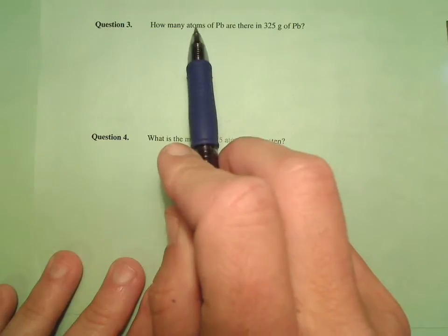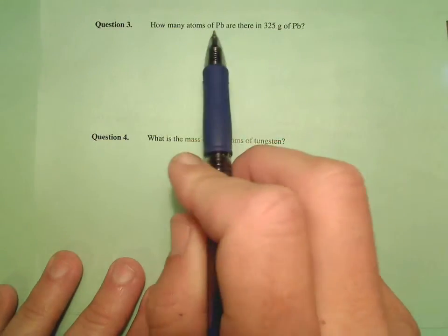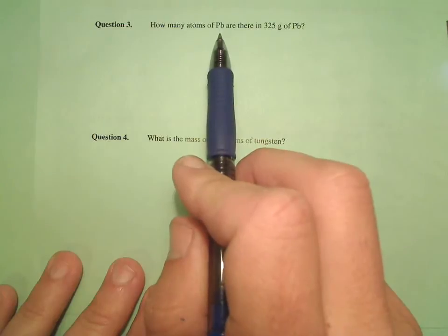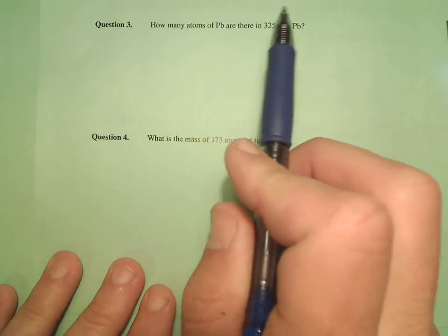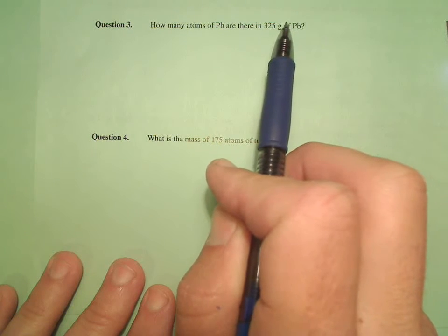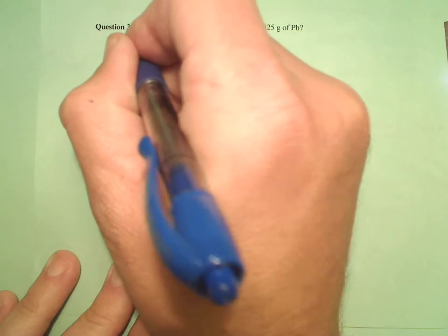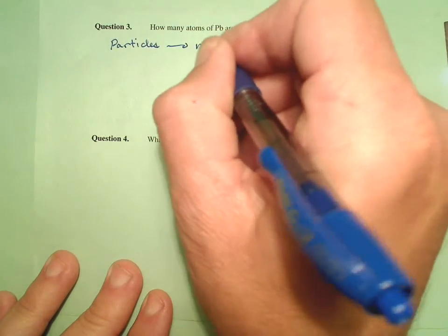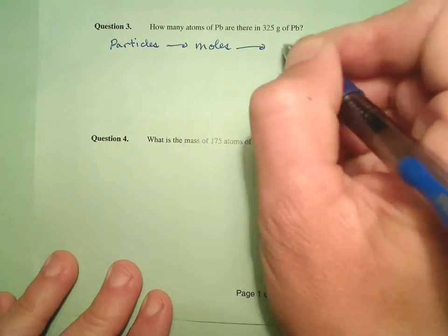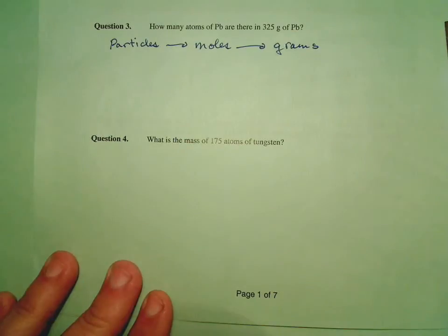So now we're going from a particle to a mass relationship. Remember, the only way you're going to do that is through moles. So we're going to have to go particles to moles, moles to grams. That's the general procedure.